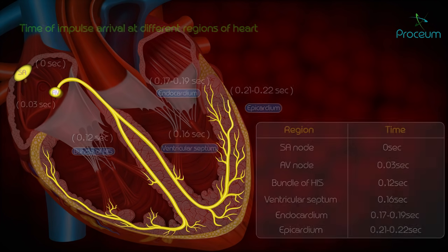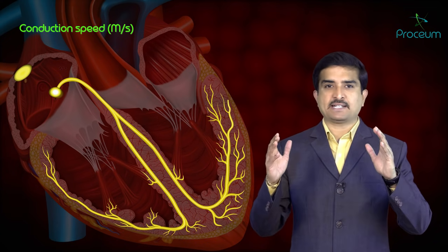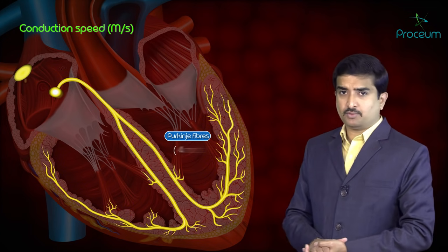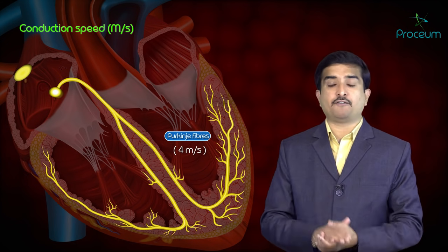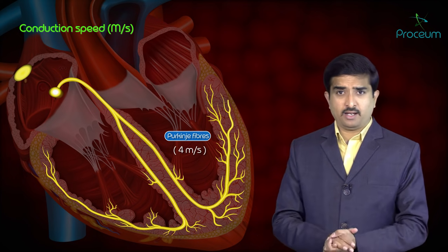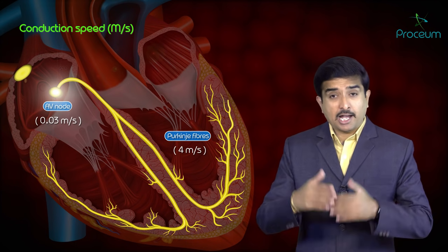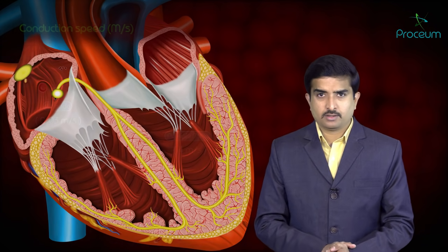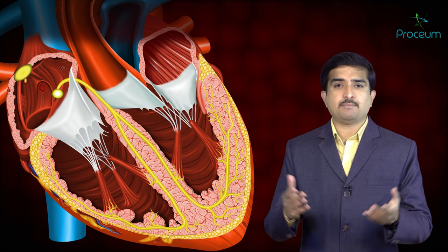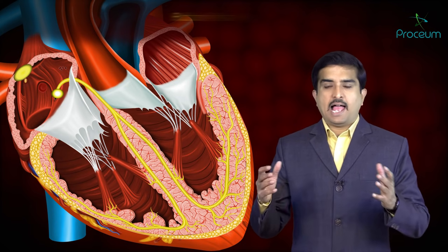Conduction speed is expressed in meters per second. Purkinje fibers are the fastest conducting fibers in the conduction system at 4 meters per second, due to the maximum number of gap junctions — more gap junctions means higher velocity. The AV node is the slowest at 0.03 meters per second, due to fewer gap junctions and a smaller fiber diameter. This completes our discussion of conduction velocities and the conduction system.